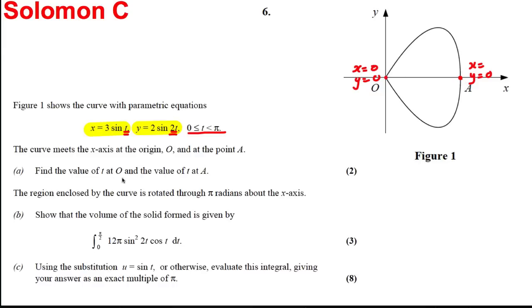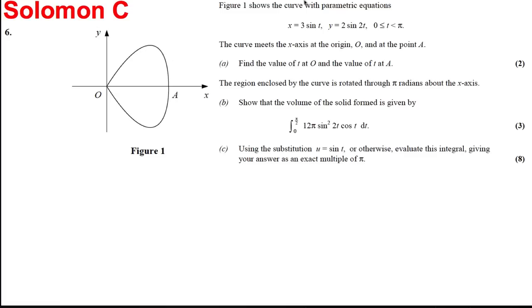Part (a) says find the value of t at O and the value of t at A. Part (b) says the region enclosed by the curve is rotated π radians about the x-axis. Let's have a go at the first part.